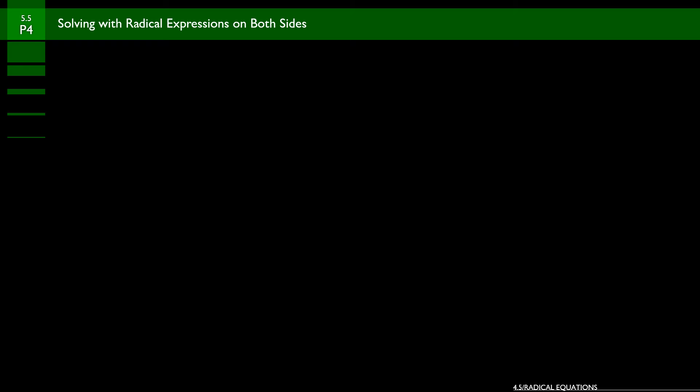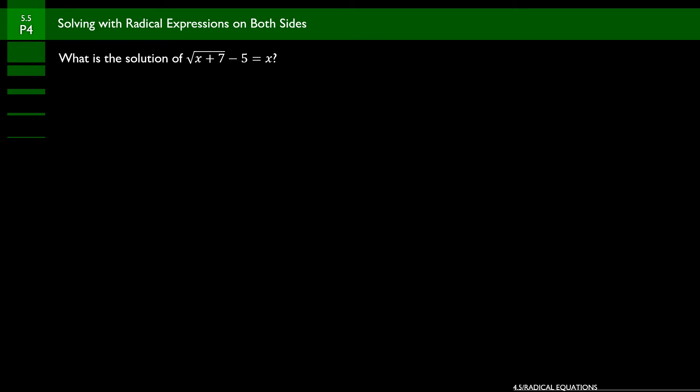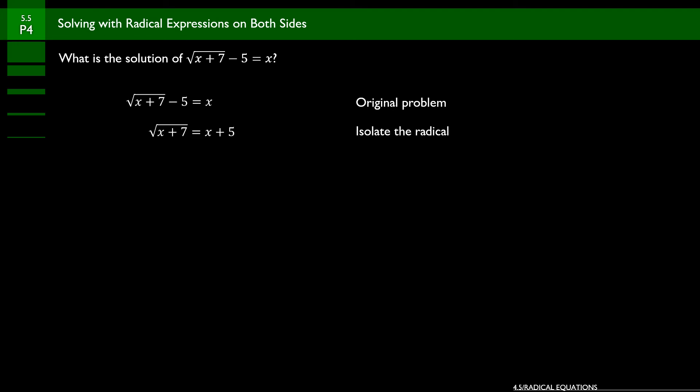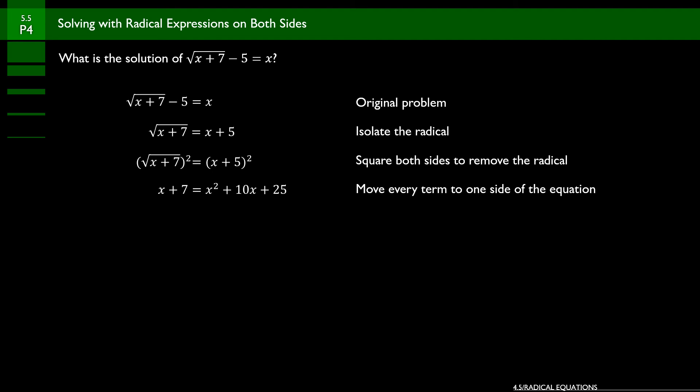Problem 4 asks: what is the solution of the square root of x plus 7 minus 5 equals x? We isolate the radical first by moving the 5 to the right side, giving the square root of x plus 7 equals x plus 5. Now square both sides to get rid of the radical: x plus 7 equals x squared plus 10x plus 25, because squaring x plus 5 requires FOILing it out.